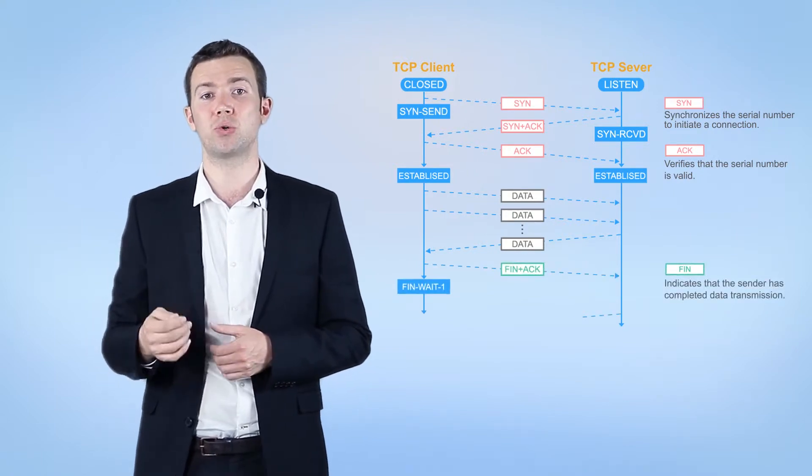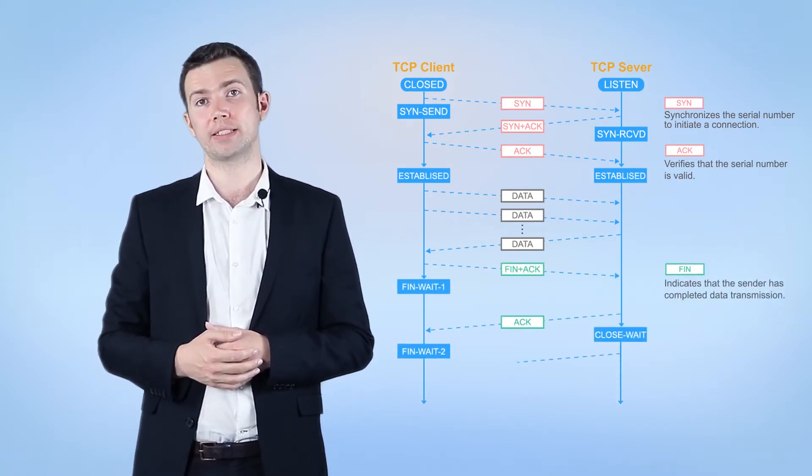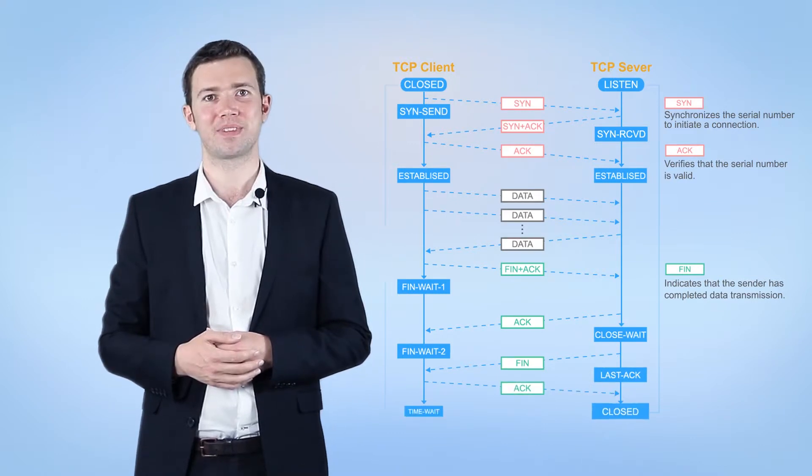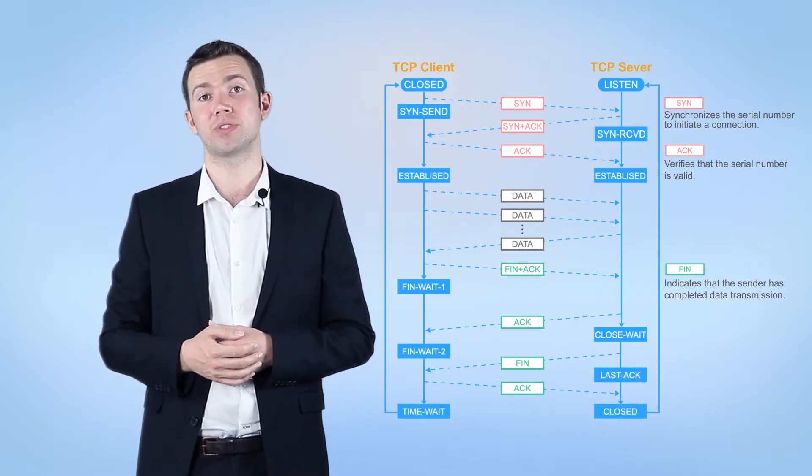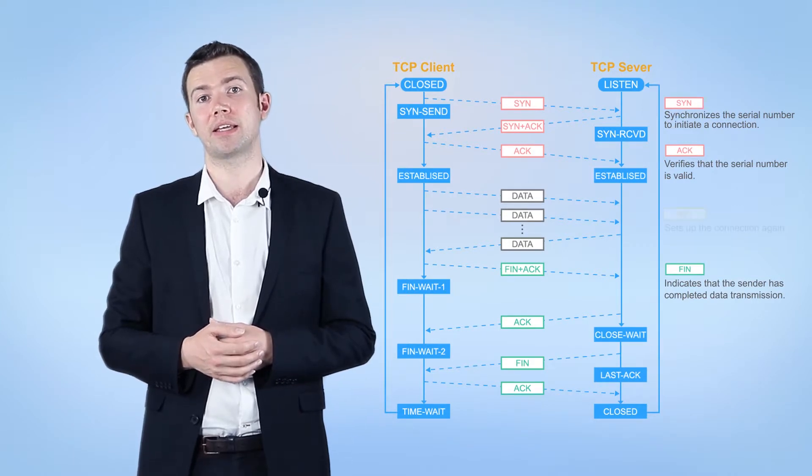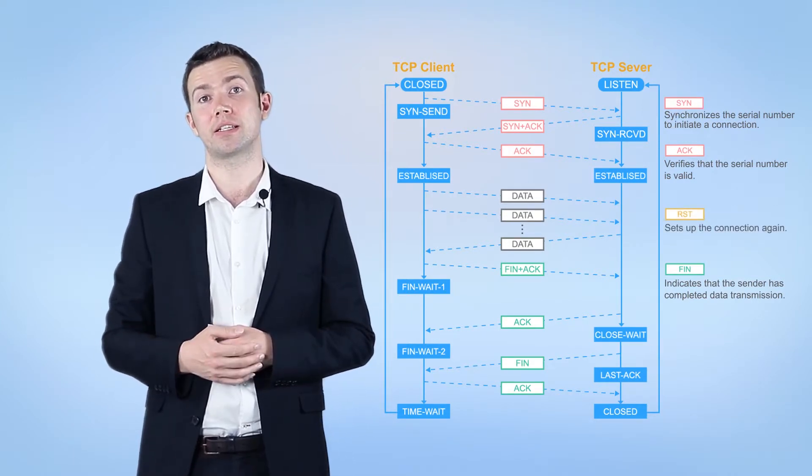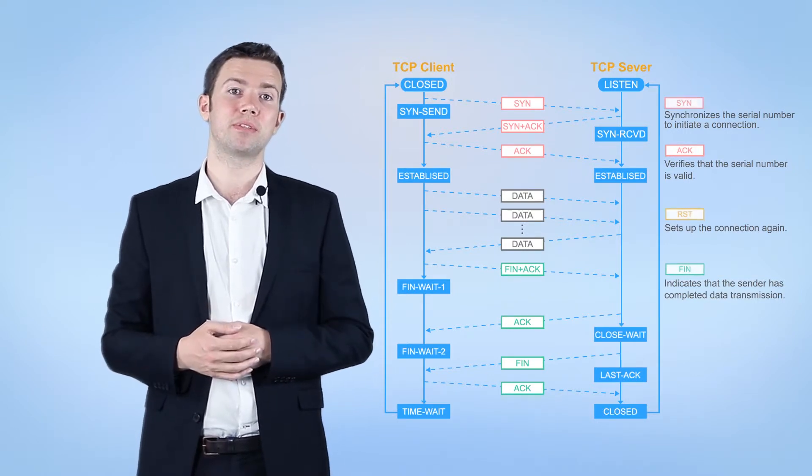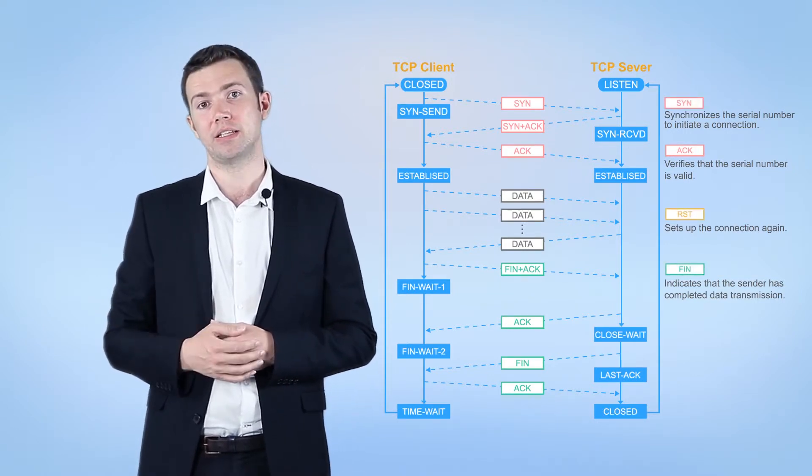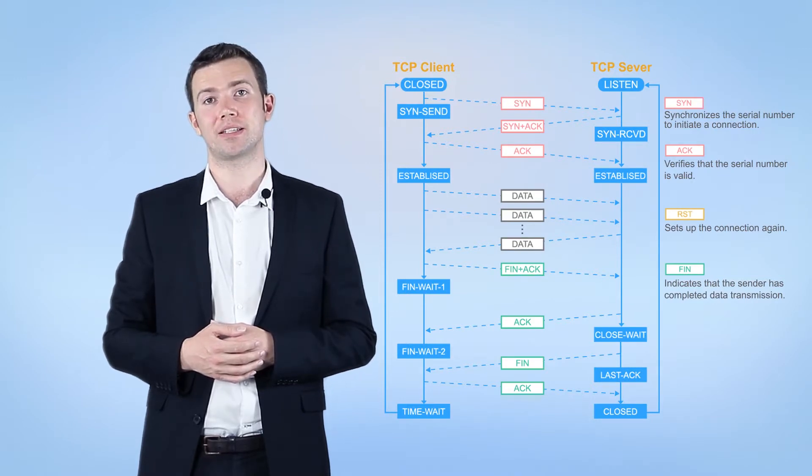The connection is then torn down through a four-way handshake. When the connection times out or an invalid data packet is received, an RST packet can be sent to set up the connection again. Fabric Insight captures TCP connection setup, tear-down, and reset packets to analyze application flows in the data center.